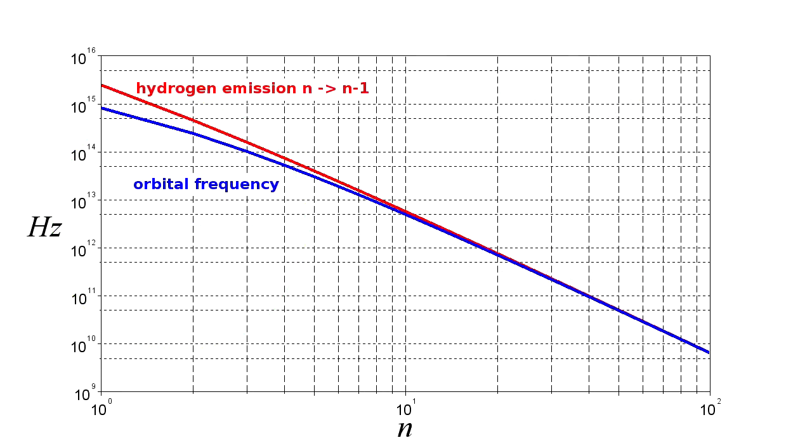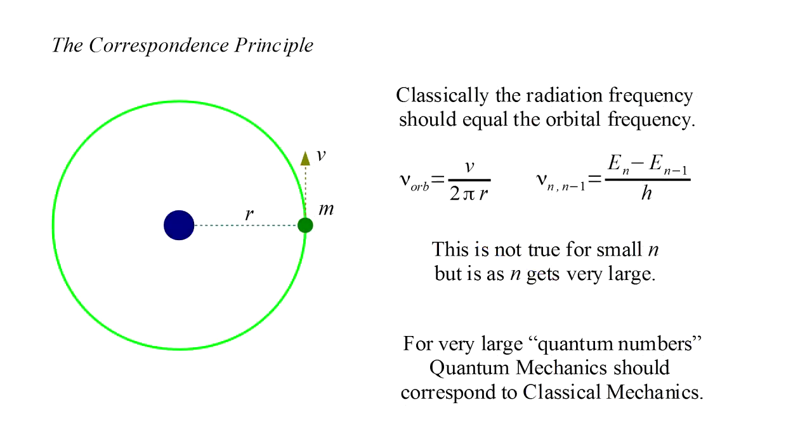On this graph we show in red Bohr's prediction for the radiation frequency for different quantum numbers, from one on the left to one hundred on the right. In blue we plot the orbital frequency, and we can see that they converge for large values of the quantum number n, that is for large orbits. Thus the quantum theory smoothly branches off from classical theory. The difference becomes prominent at very small scales, that is for very small orbits, very small quantum numbers. We have the guiding principle that for large quantum numbers, quantum mechanics should correspond to classical mechanics.